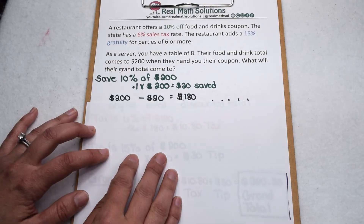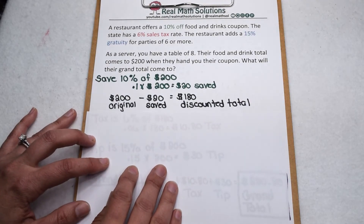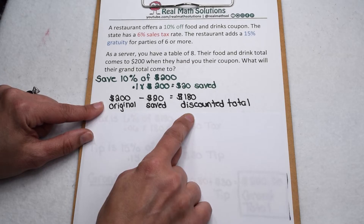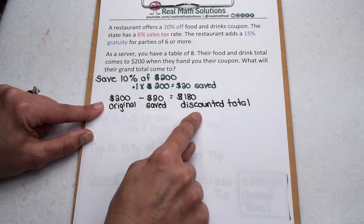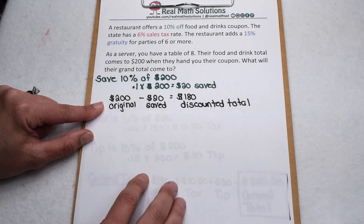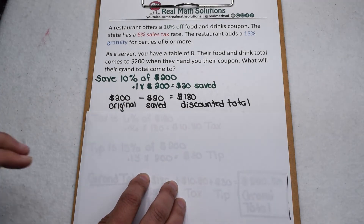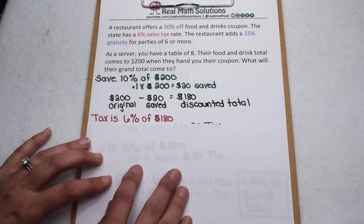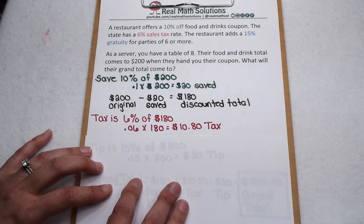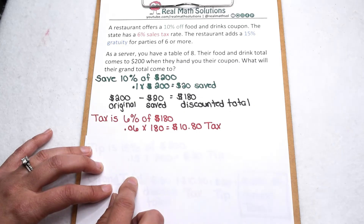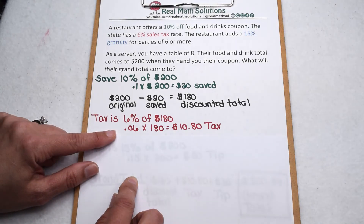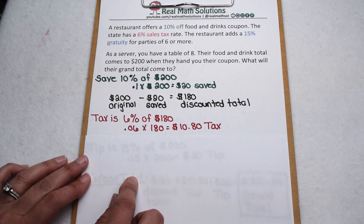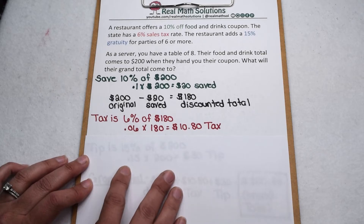Before we can look at sales tax, we need to find their discounted total. Sales tax is charged on money spent — not the original price, but the discounted price. $200 minus the $20 saved equals $180 for their discounted total. So sales tax is going to be 6% of $180 — change that to a decimal, multiply it out, and that's $10.80 in tax.